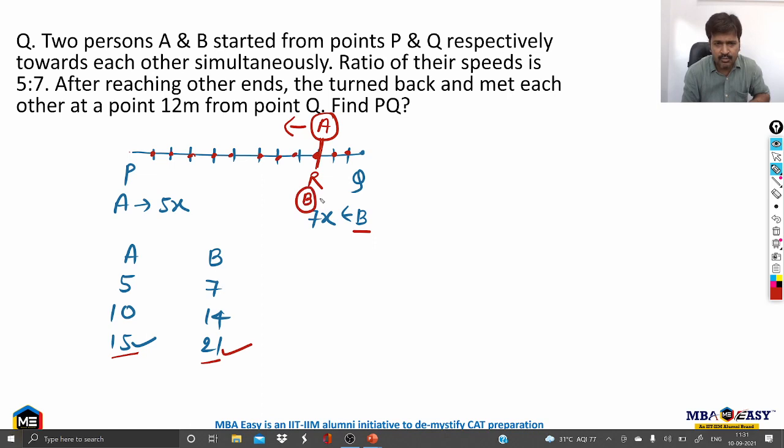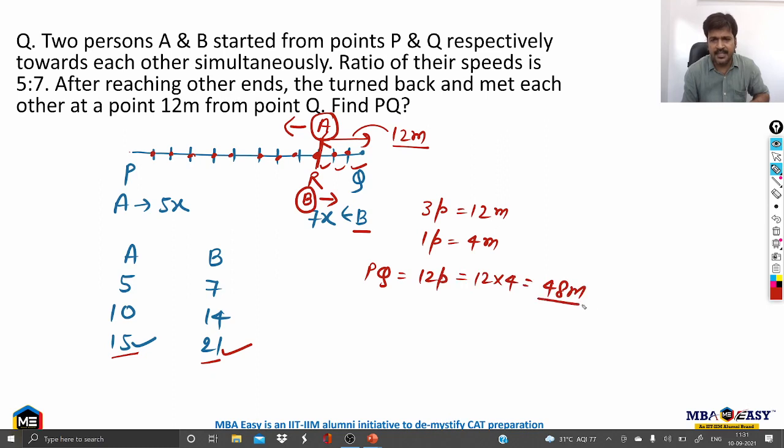By the time A travels from P to Q and Q to R, B would have travelled from Q to P and again back to R. So, this point is R, and this distance is given to you. This distance is 12 meter. The question says this is 12 meter. Now, this is 3 parts. 1 part, 2 part, 3 part. So, if 3 part is 12 meter, 1 part would be 4 meter. And the total distance, P to Q, is 12 parts. Because, we have divided into 12 equal parts. So, 12 parts will be 12 into 4. And this is 48 meter.